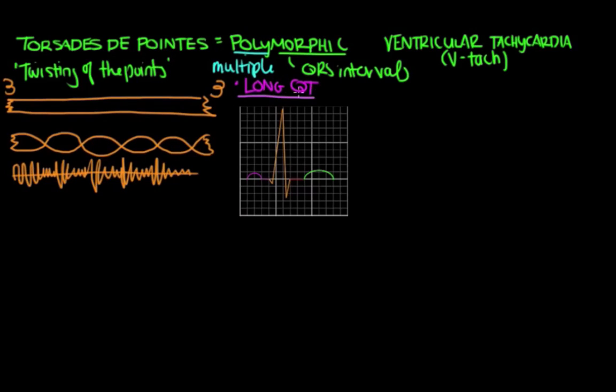Okay, so let's go over QT. Here we have a single beat on EKG. So we're going to have the P wave and the QRS interval and the T wave. And the QT interval is from the beginning of the Q all the way to the end of the T wave. That's the QT interval.